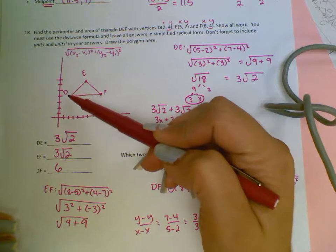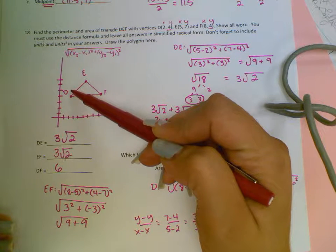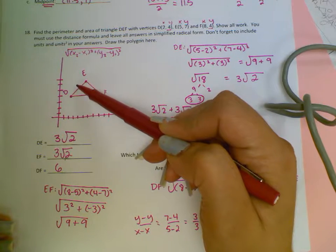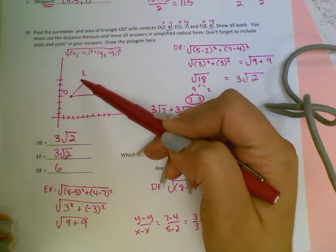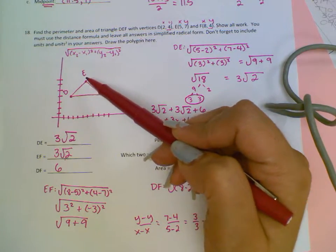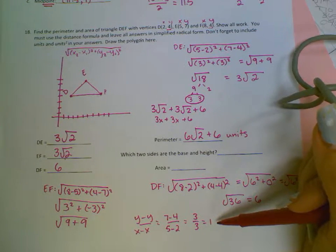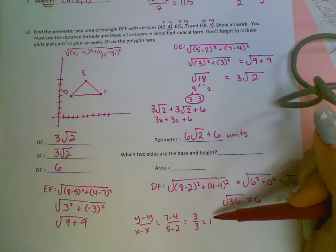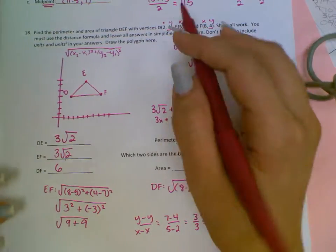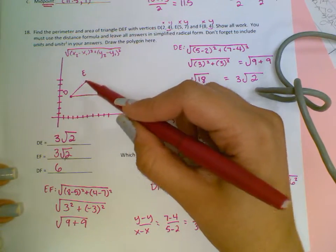So the slope of this is 1, which means when we go up 1, we'll go over 1. When we go up 1, we'll go over 1. When we go up 1, we'll go over 1. So the opposite reciprocal needs to be, instead of positive 1, it needs to be negative 1. So I will check that for EF, because these two look to be perpendicular, where this guy, he doesn't seem to be perpendicular. So I'm going to check EF.